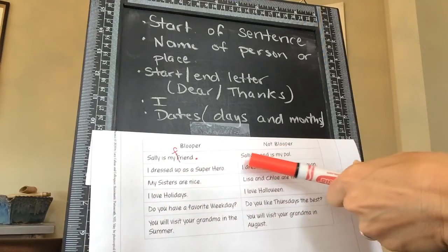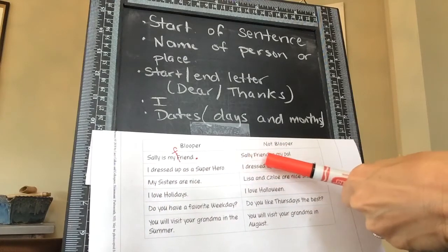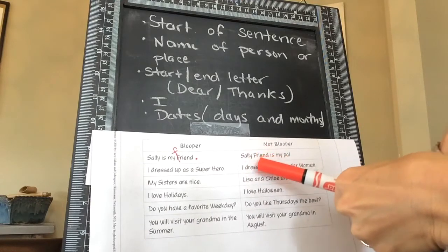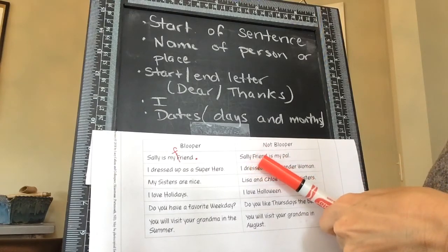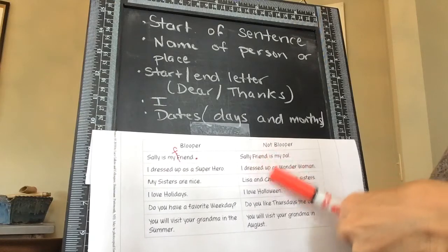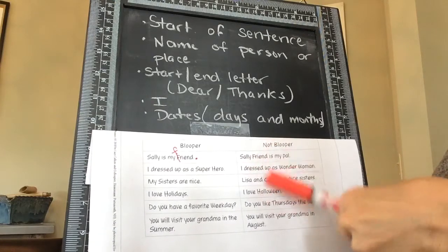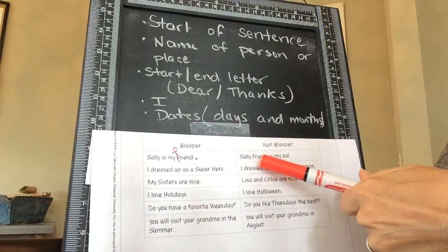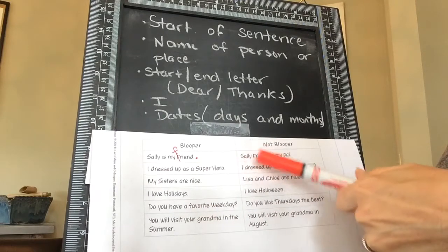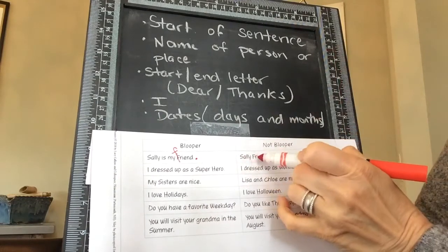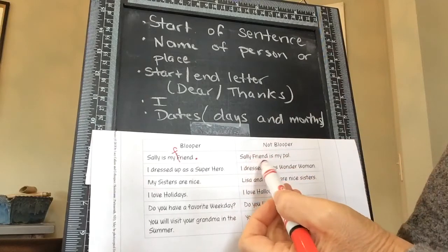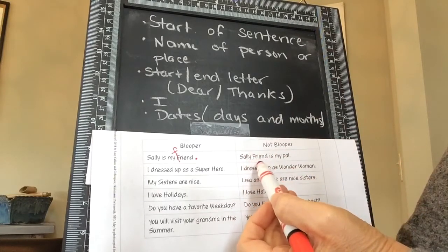This one says 'Sally Friend is my pal' — that's a little confusing. It's making the word 'friend' be her last name. So this one's not a blooper — we don't have to fix anything on that side. That's why it's correct. Even though it is a little confusing, 'Friend' is uppercase here because it's referring to her last name.